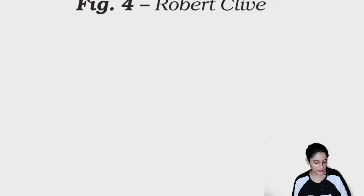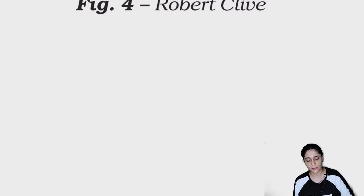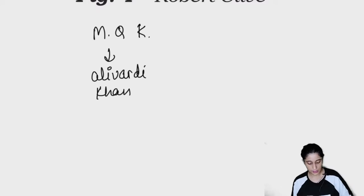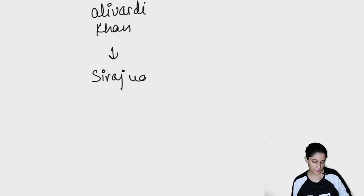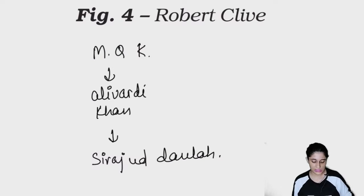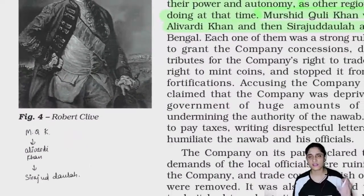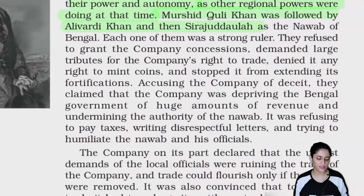Murshid Kuli Khan ke baad Bengal ke governor ya Nawab kaun bane? Murshid Kuli Khan ke baad jo Nawab bane woh the Ali Vardy Khan. Aur Ali Vardy Khan ke baad Nawab bane Siraj Udaula. Siraj Udaula bahut choti umar mein Nawab ban gaye the, thode impulsive the — isi ki wajah se inke pataan hota hai. Bahut jaldi decisions lete the jiske consequences inhone achhe se nahi soche the.